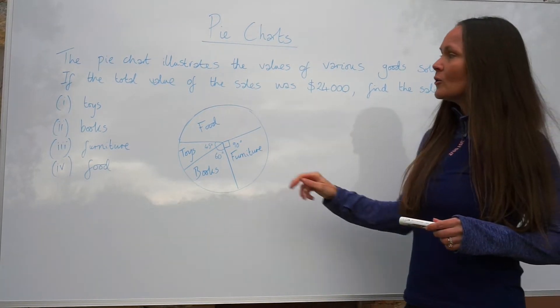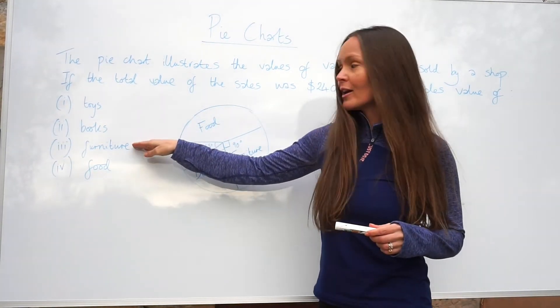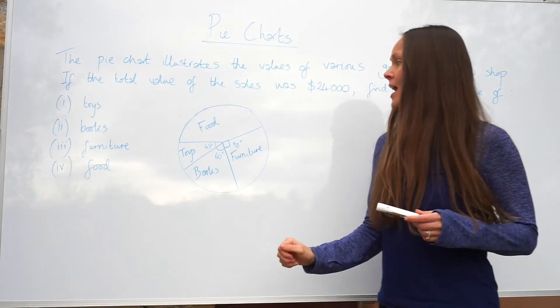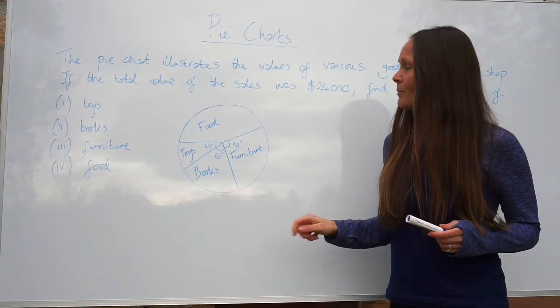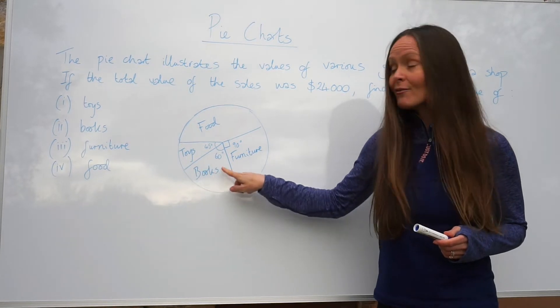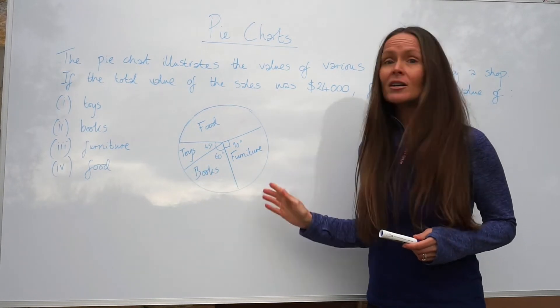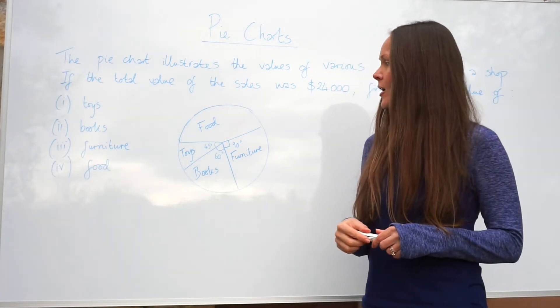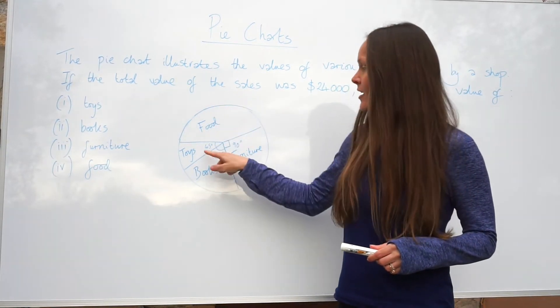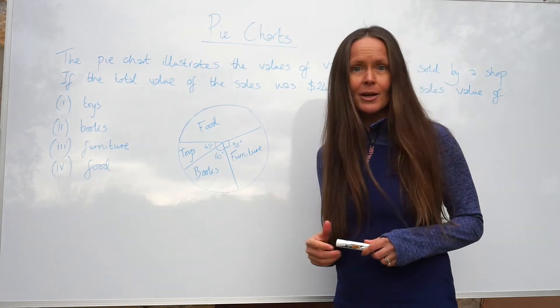If the total value of the sales was $24,000, find the sales value of toys, books, furniture and food. We've also been given a pie chart with the number of degrees for toys, books and furniture. The pie chart is not to scale, so usually you wouldn't be able to use a protractor to measure the angles. They've been given to us in the question.